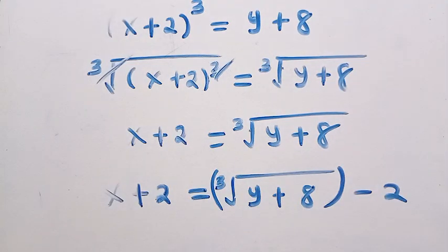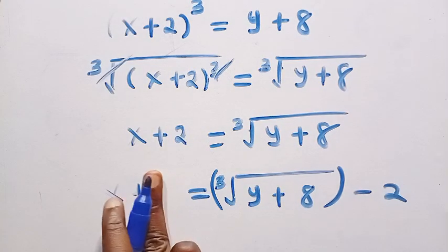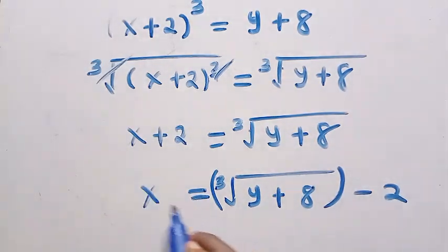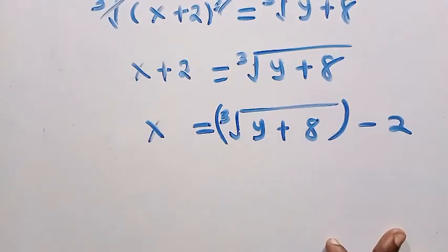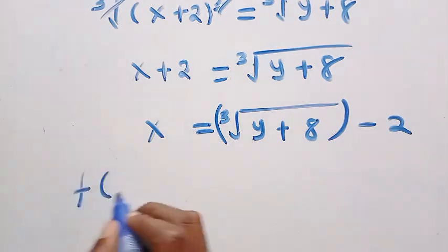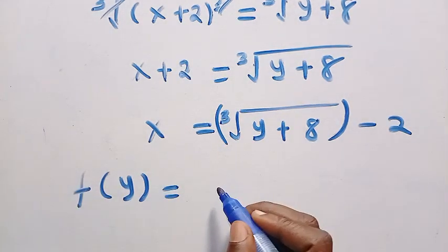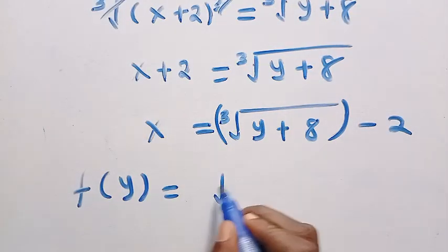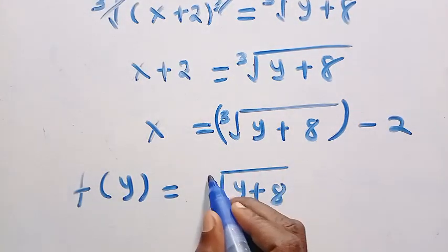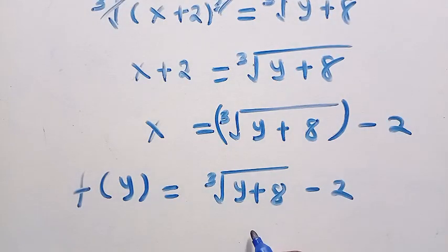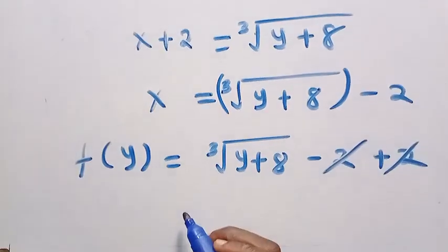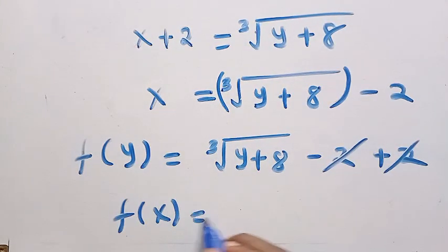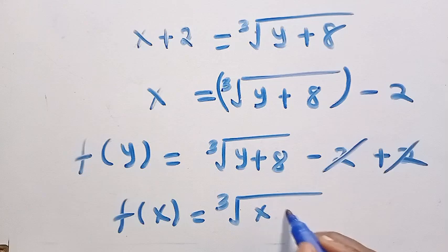We put this in brackets and subtract 2 from both sides, so x equals cube root of y plus 8 minus 2. Coming back, we replace x plus 2 in f of y equals x plus 2 with the cube root of y plus 8. Then minus 2 plus 2 — the 2s cancel. By changing y to x, we have f of x equals the cube root of x plus 8.